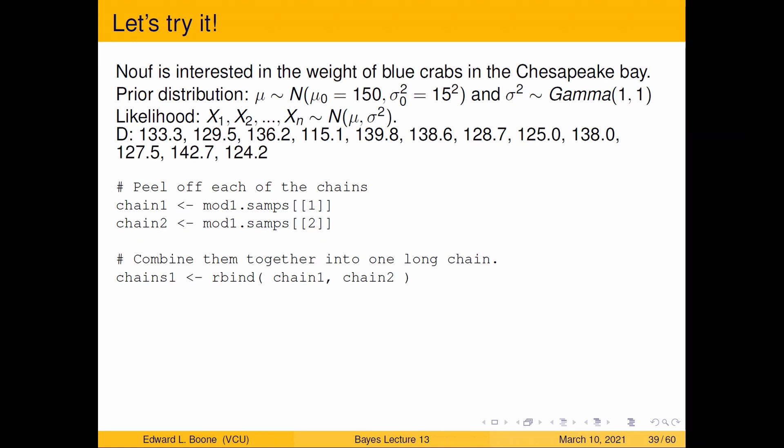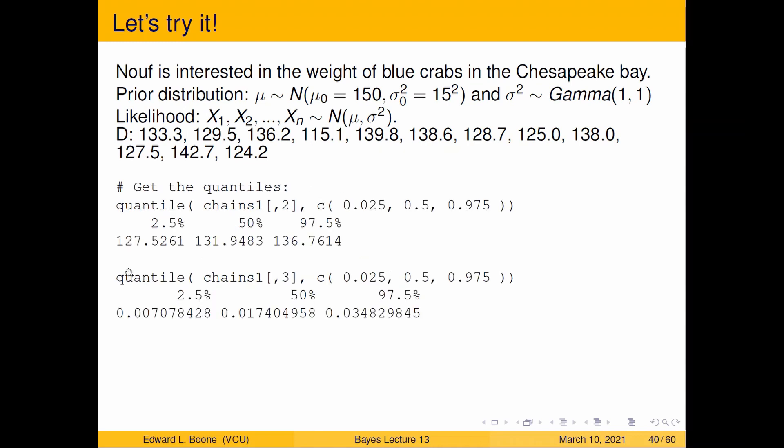Alright, now that I've run everything, I'm going to peel the samples off. Chain one, chain two. Remember I did two chains. So I'm going to do mod1.samps[[1]] and mod1.samps[[2]], and I'm going to stack them on top of each other so that all the data is in one long chain. Then from this I can actually just get the quantiles that I wanted. Here are my quantiles for my posterior credible interval, and I can get a posterior credible interval on σ1. But remember this is precision, so I need to do one over that to get it to be something useful.